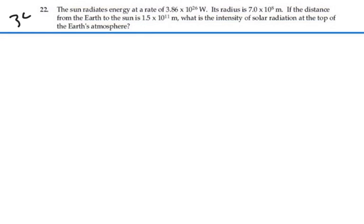Here's problem 34-22. The sun radiates energy at a rate of 3.86 times 10 to the 26 watts (joules per second). Its radius is 7 times 10 to the 8 meters. If the distance from the earth to the sun is 1.5 times 10 to the 11 meters, what is the intensity of solar radiation at the top of the earth's atmosphere?